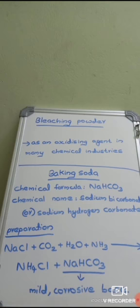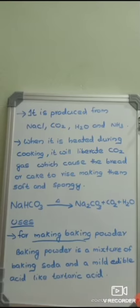When baking soda is heated during cooking, it liberates carbon dioxide gas, which causes bread or cake to rise, making them very soft and fluffy. The equation is: NaHCO₃ on heating forms Na₂CO₃ plus CO₂ plus H₂O. This is the reason why we add baking soda to food items during cooking.